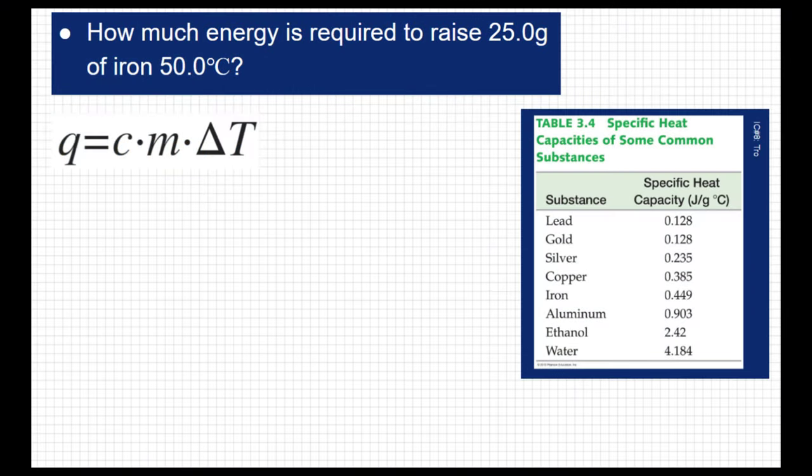So when we approach this problem, there are a couple things that we're going to need. We're going to use this equation we've talked about, Q equals C M delta T, and we're going to need to know a specific heat value. In particular, we're going to look for the specific heat value of iron here.